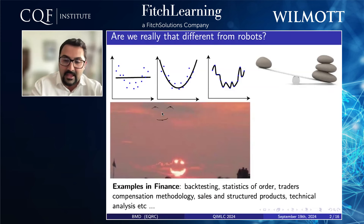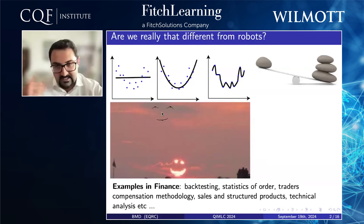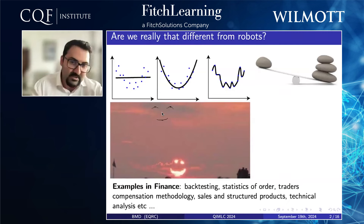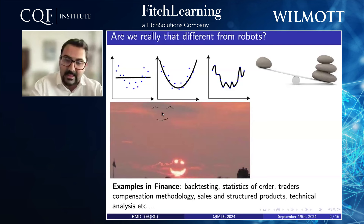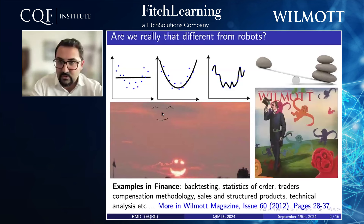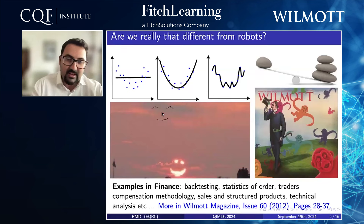If you're interested in how this kind of overfitting occurs for humans in finance — especially in backtesting, statistics of order, traders' compensation methodology, sales and structured products, or technical analysis — I invite you to read issue 60 of Wilmott Magazine, pages 28 to 37. The title of the article is 'The Unfortunate Cost of Pattern Recognition: The Genetic Disorder of the Financial Industry.'